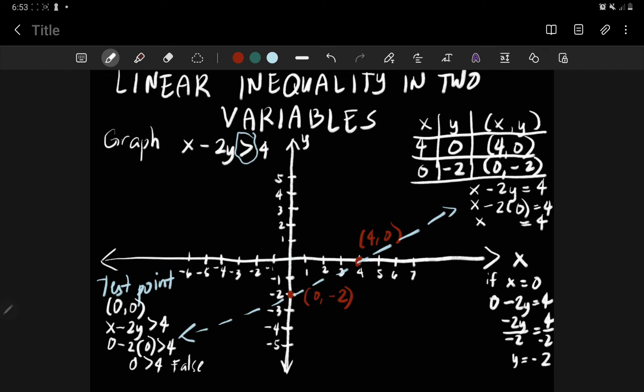So when your statement is false, mean to say the given test point does not satisfy the given inequality. Meaning that 0, 0 or the origin is not a solution to the given inequality. So meaning the shading, it's not towards that 0, 0, but it is far away or away from 0, 0. So the shading will be down to the right.